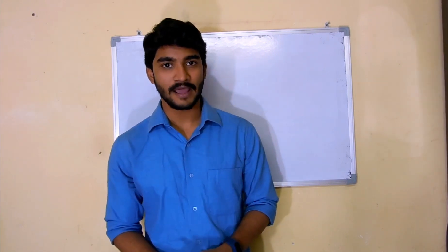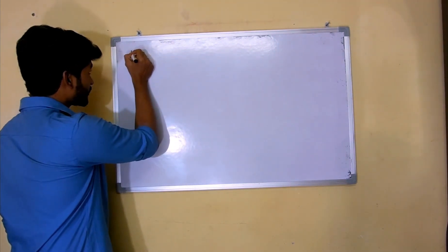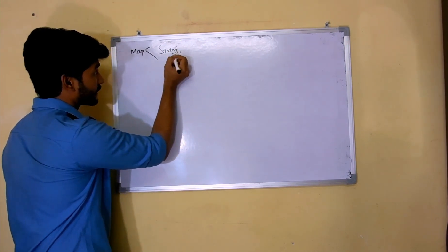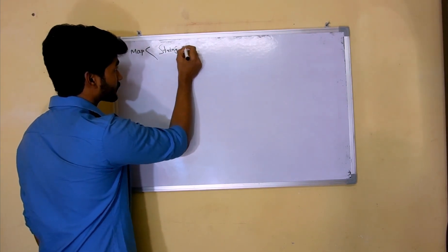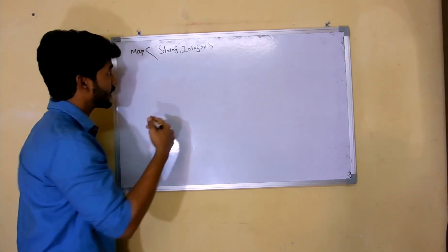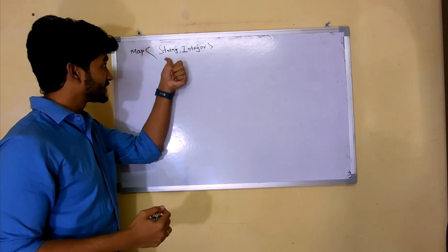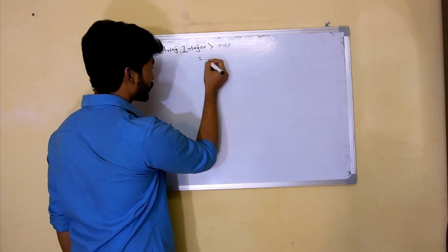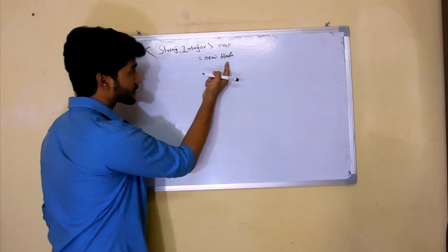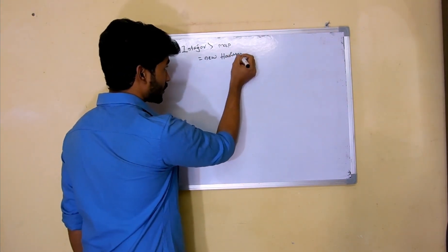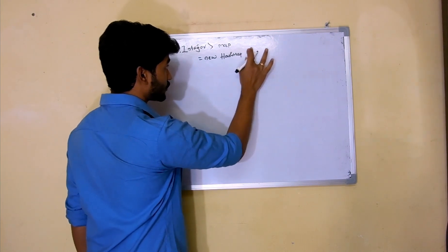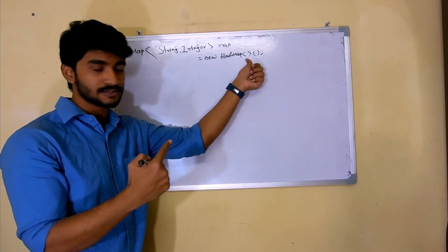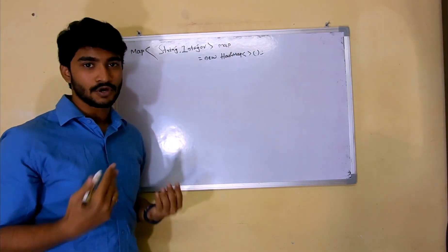Let's create a very simple map and insert a few values. I'm creating a HashMap with string as the key and integer as the value. I'm taking the reference as 'map' and writing 'new HashMap'. HashMap is actually an implementation of the Map interface. I'm not specifying anything inside the diamond bracket in the constructor, so no confusion there.